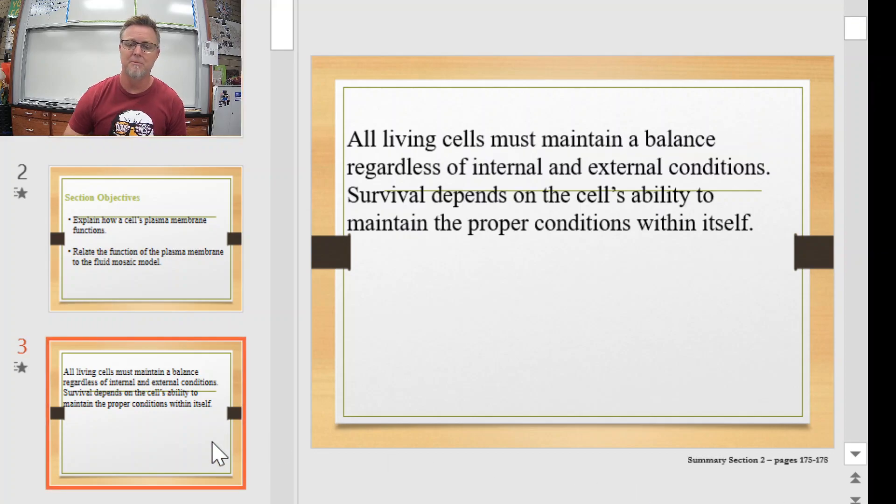So as we get started with the cell membrane and cell transport, one of the first things we have to revisit is why do we have these things. Living things from the cell all the way up to big things like us, we have to maintain balance regardless of what's going on inside or outside of our bodies at all times. That doesn't mean you can't ever trip and fall over.